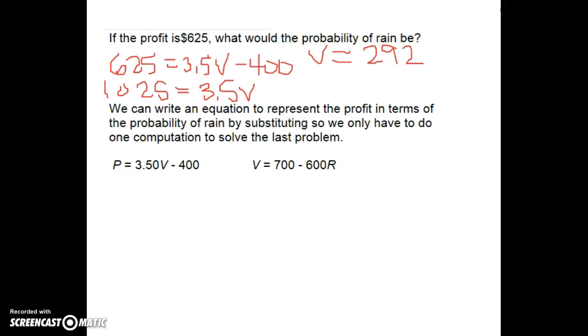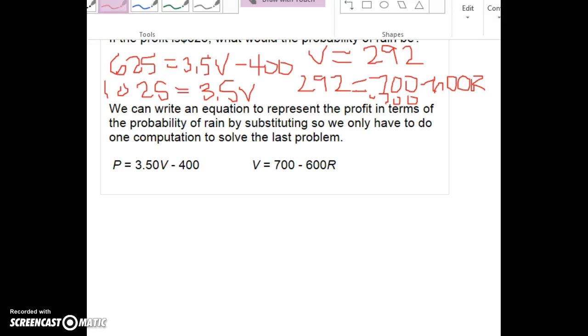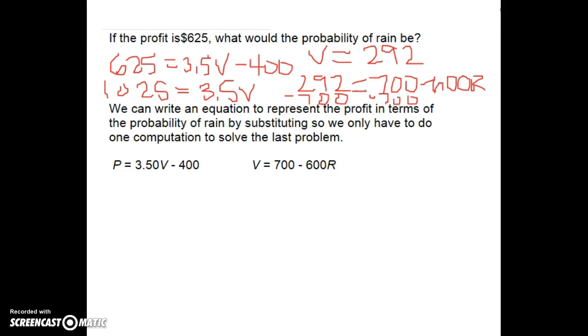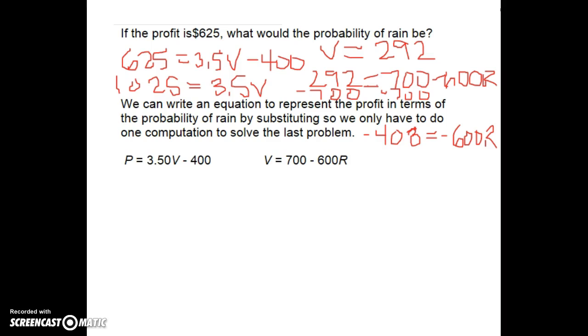Now that I know my number of visitors, I can actually calculate the probability of rain. So if the number of visitors is 292, then 700 equals 292 minus 600R. From both sides I'm going to subtract 700. So 292 minus 700 is negative 408.